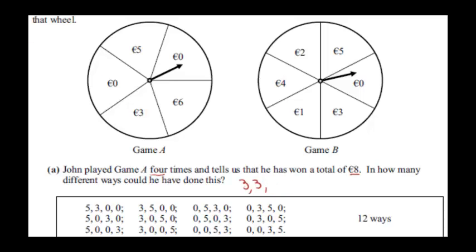Also, three cannot appear twice, because three plus three is six, and we would then need two ones — but there's no one. Or we would need a two followed by a zero, but there's no two. So only five and three can appear, and they can only appear once. Five cannot appear twice because five plus five is ten — that's too big. So five and three appear once, and the other two numbers must be zeros, giving a total of eight.